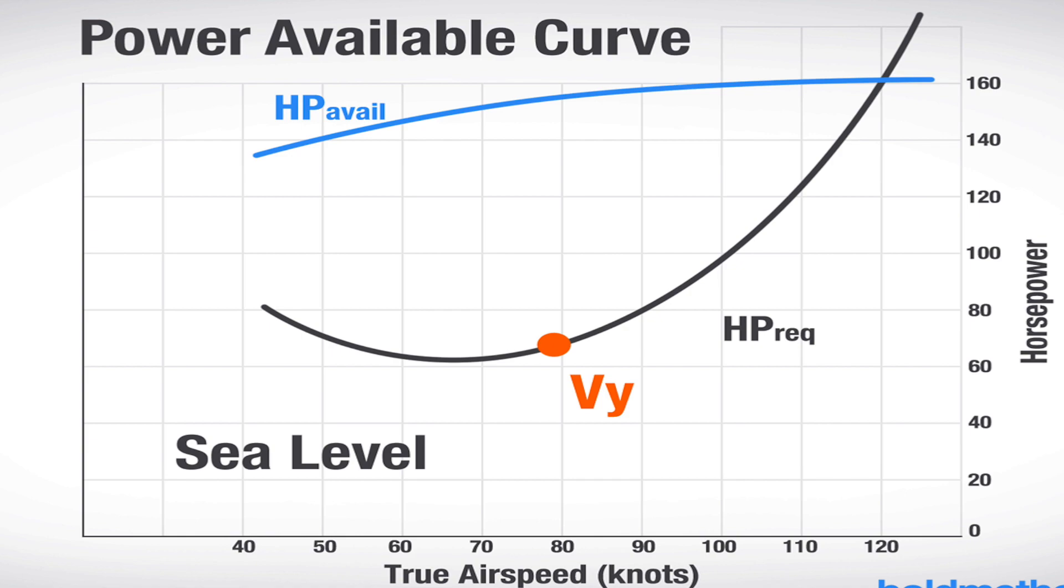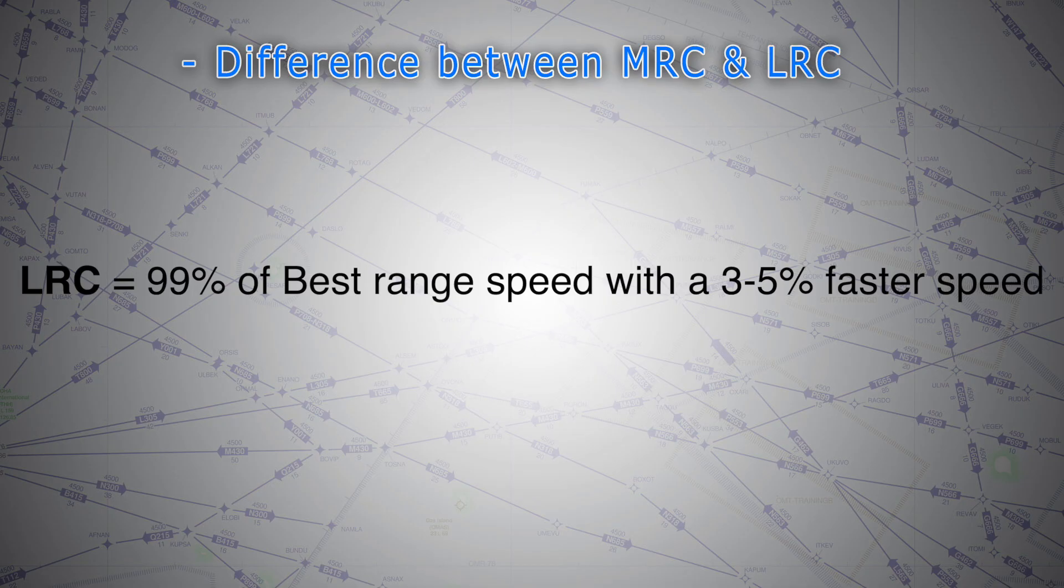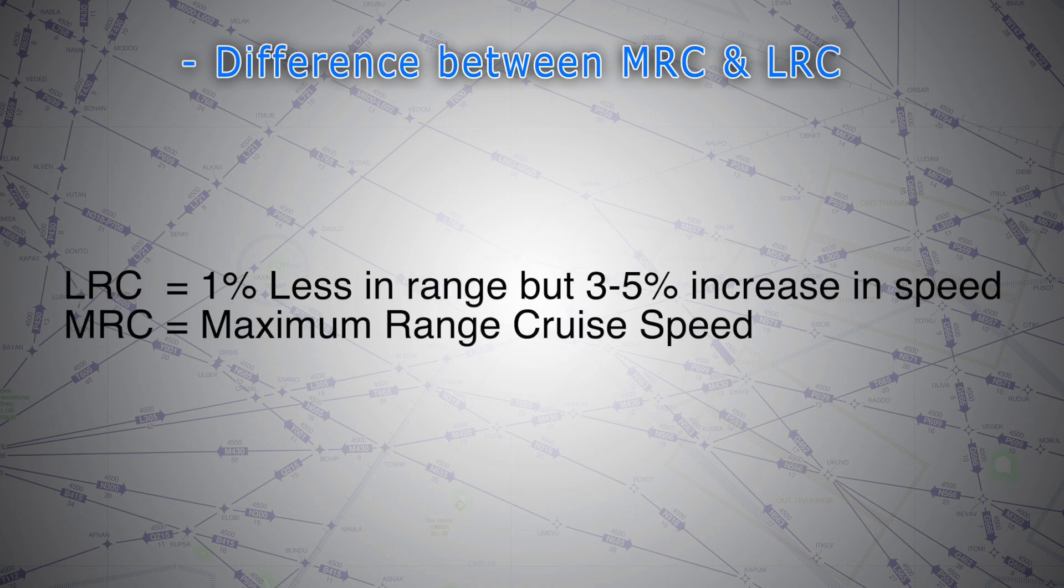In fact, the long range cruise LRC thrust setting for a jet usually provides 99% of the maximum or best range speed MRC. At LRC, you trade 1% of range for 3 to 5% faster airspeed.